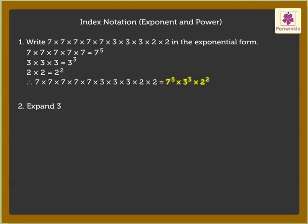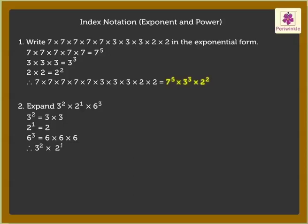Now, let us expand 3 raised to the Power of 2 into 2 raised to the Power of 1 into 6 raised to the Power of 3. We know that 3 raised to the Power of 2 is equal to 3 into 3. 2 raised to the Power of 1 is equal to 2. 6 raised to the Power of 3 is equal to 6 into 6 into 6. Therefore, 3 raised to the Power of 2 into 2 raised to the Power of 1 into 6 raised to the Power of 3 is equal to 3 into 3 into 2 into 6 into 6 into 6.